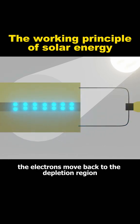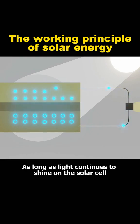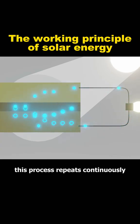After filling the electron holes in the lower region, the electrons move back to the depletion region. As long as light continues to shine on the solar cell, this process repeats continuously.